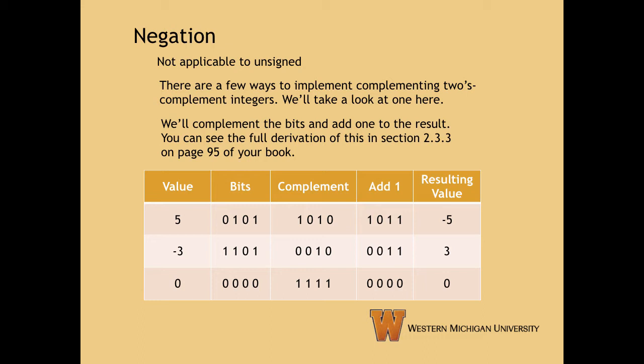Negation is fairly straightforward. It is not applicable to unsigned numbers, of course, and we can negate two's complement numbers quite easily. You can see the full derivation of this technique in section 2.3.3 on page 95 of your book, but the application just involves complementing the bits and adding one to the result. This table shows some examples of this in action.